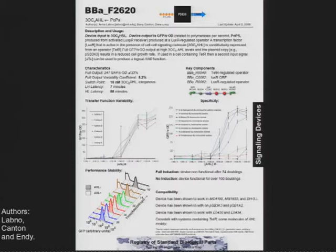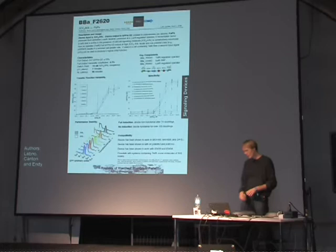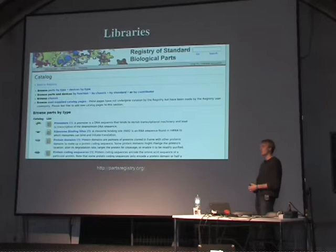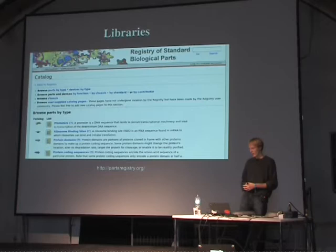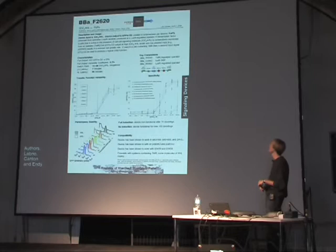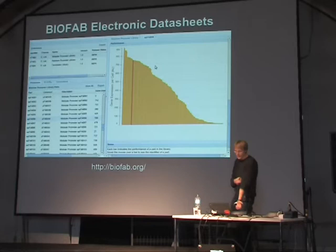The problem with these biological devices is that they don't have a data sheet like we see in electronics. If you have a part, you really want to know exactly how it works under different circumstances — when it breaks down, what the linear range is, what the input and output characteristics are. A lot of components in the parts registry are not very well characterized, and there hasn't been a really good standard for characterizing them. It's kind of like going into a library of open source projects where most of them are undocumented — many were contributed by students working on a deadline.